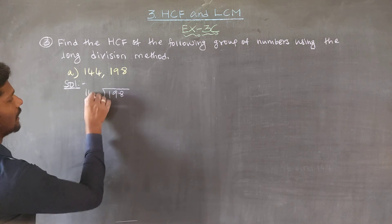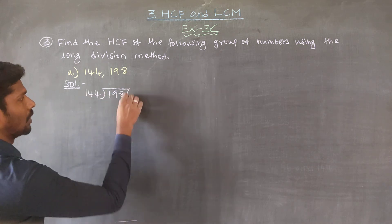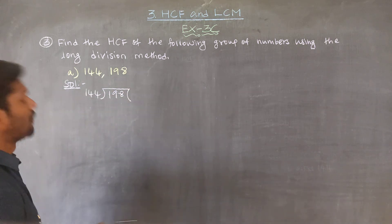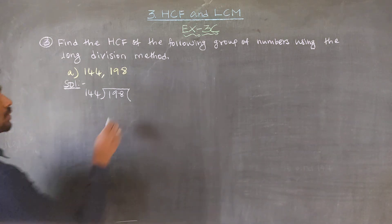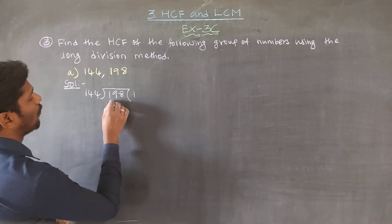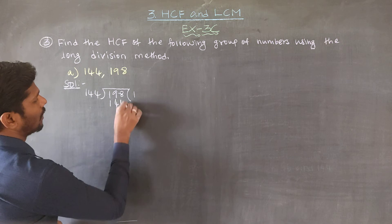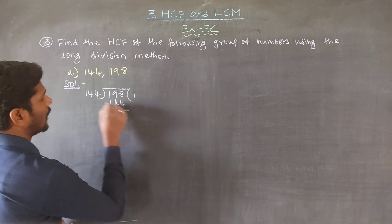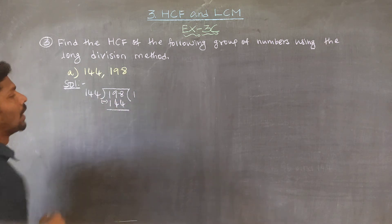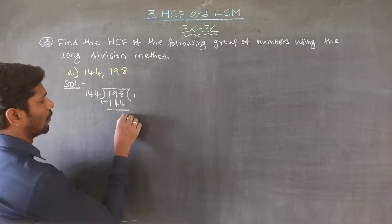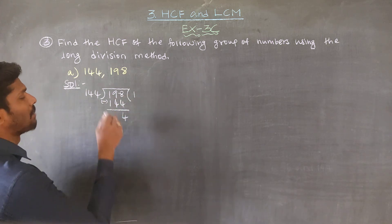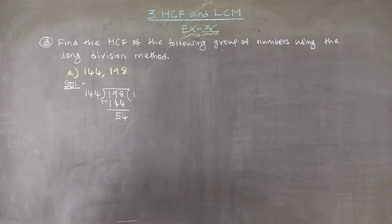144 is the divisor. If you divide 144 by 98, it goes 1 time. 144 minus 144, subtract: 8 minus 4 is 4, 9 minus 4 is 5.